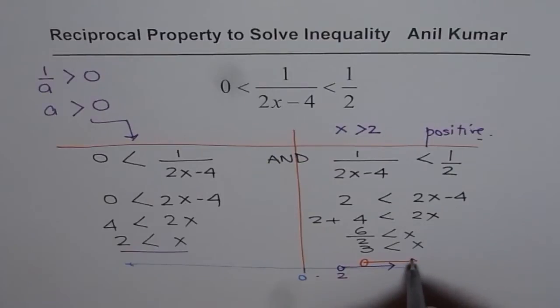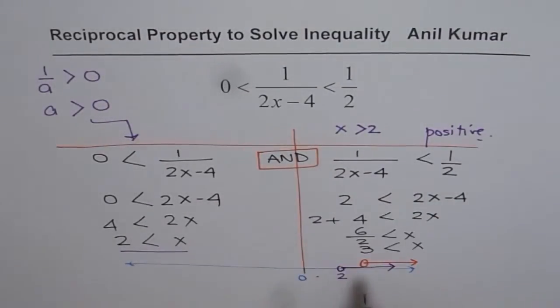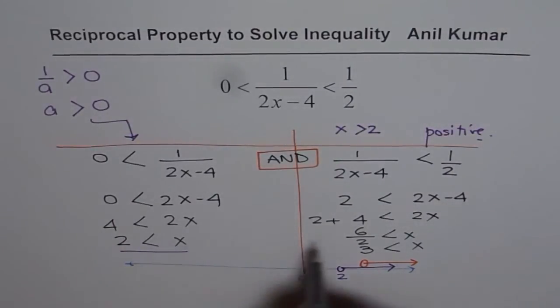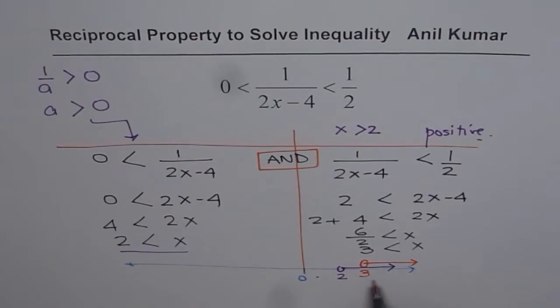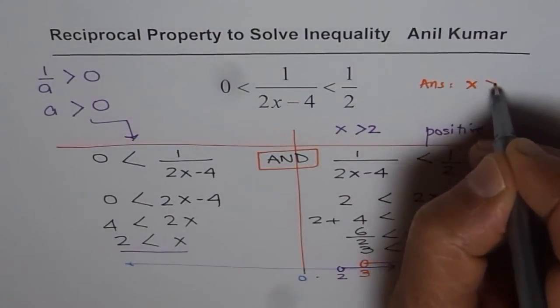The AND condition here clearly indicates that the solution should be common between these two, and that is x > 3. So our answer is x > 3.